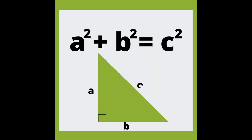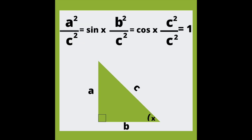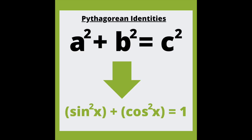A squared plus B squared equals C squared — that is the Pythagorean theorem relating the sides of a right triangle. But when you divide all sides by C squared and refer to the reference angle, A over C is sine of X and B over C is cosine X and C now equals 1. Therefore sine squared X plus cosine squared X equals 1.